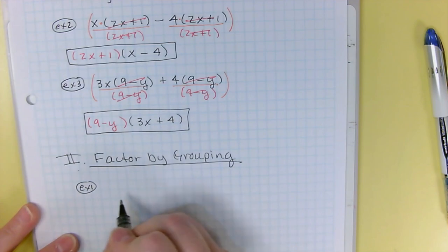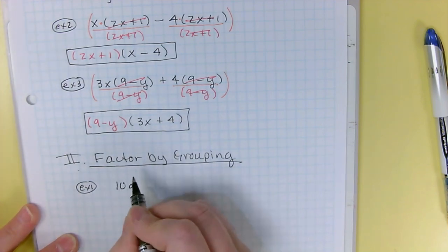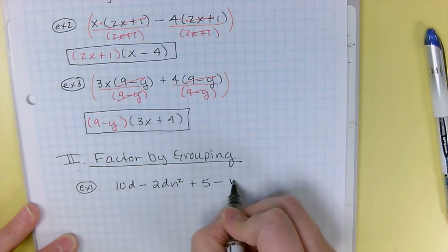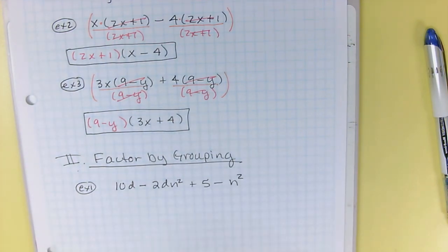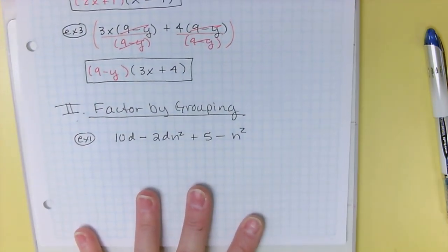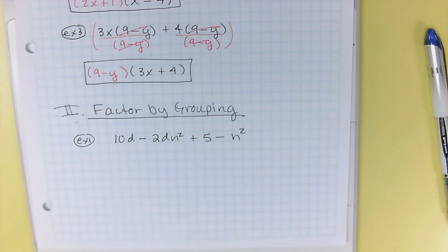So example one, 10d minus 2dn squared plus 5 minus n squared. All right, so the first thing you do when you factor by grouping is the first thing you always do. See if there's anything you can divide out. Well, there's nothing that these have in common, so nothing's going to divide out.